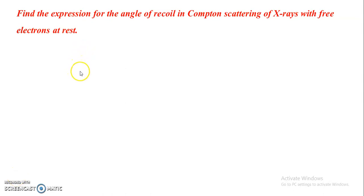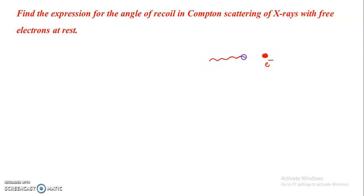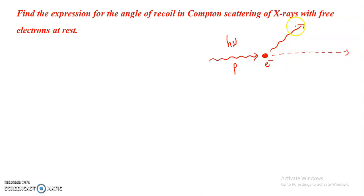Welcome back to my channel. Today we are going to find the expression for the angle of recoil in Compton scattering of X-rays with free electrons at rest. This is our free electron, which is initially at rest, so its momentum is initially zero. An X-ray photon of energy hν and momentum p is incident on the electron. After interaction, the photon is scattered along a new direction with energy hν' and new momentum p'.